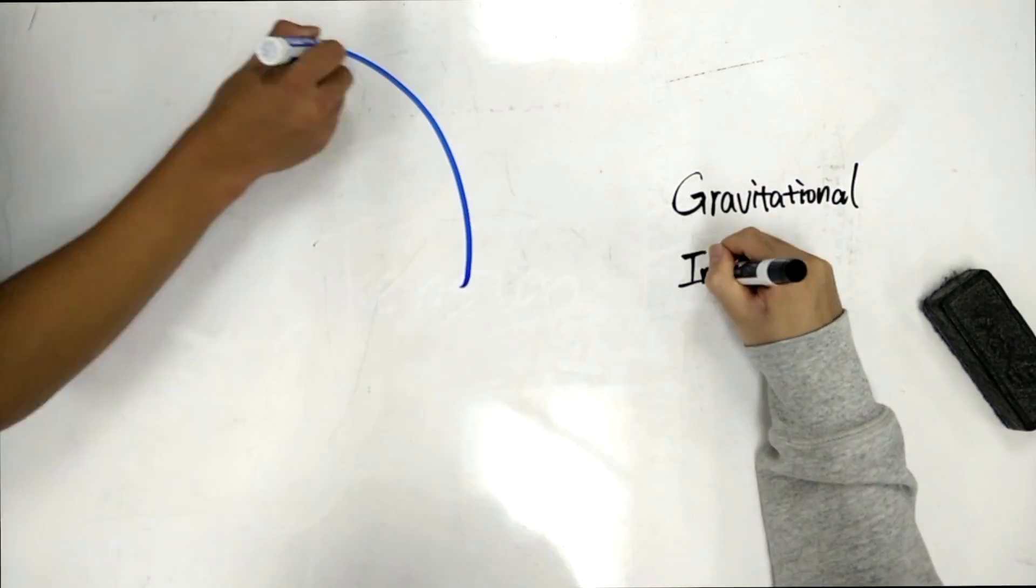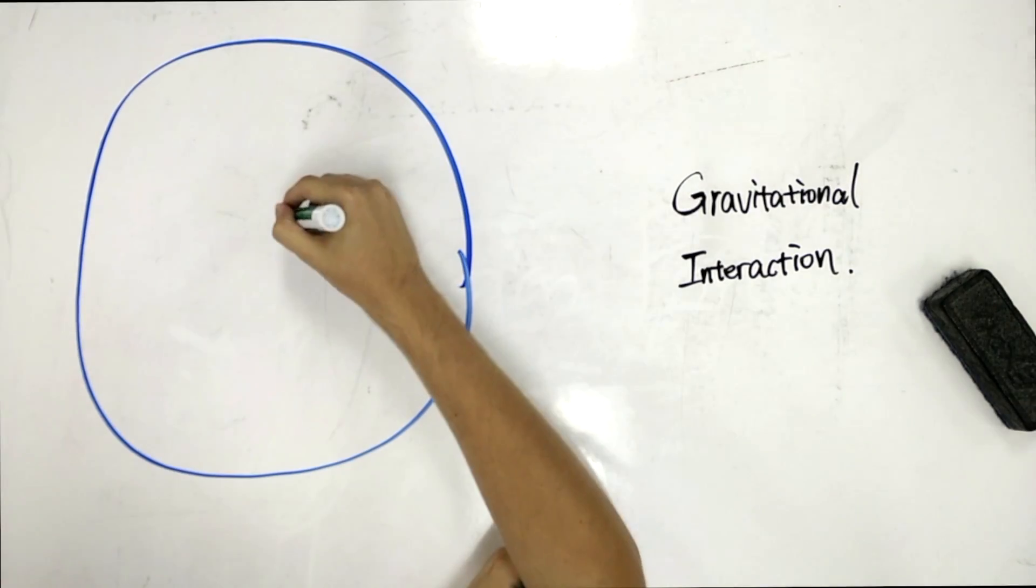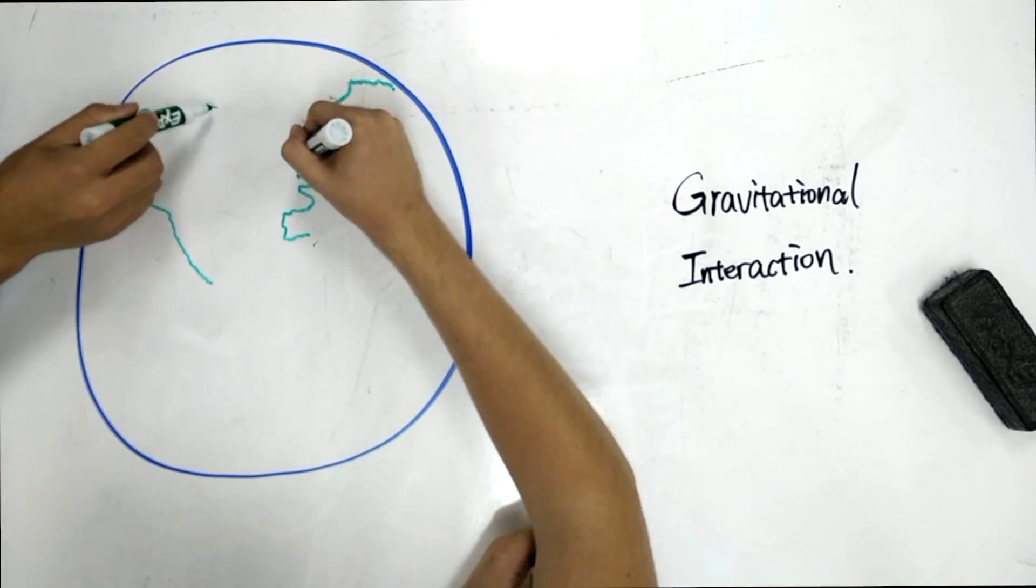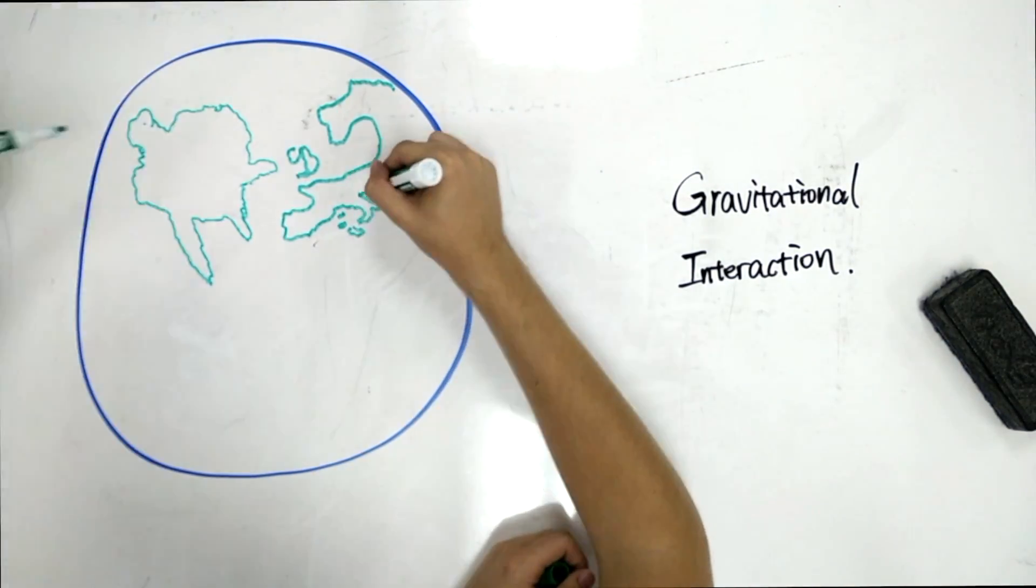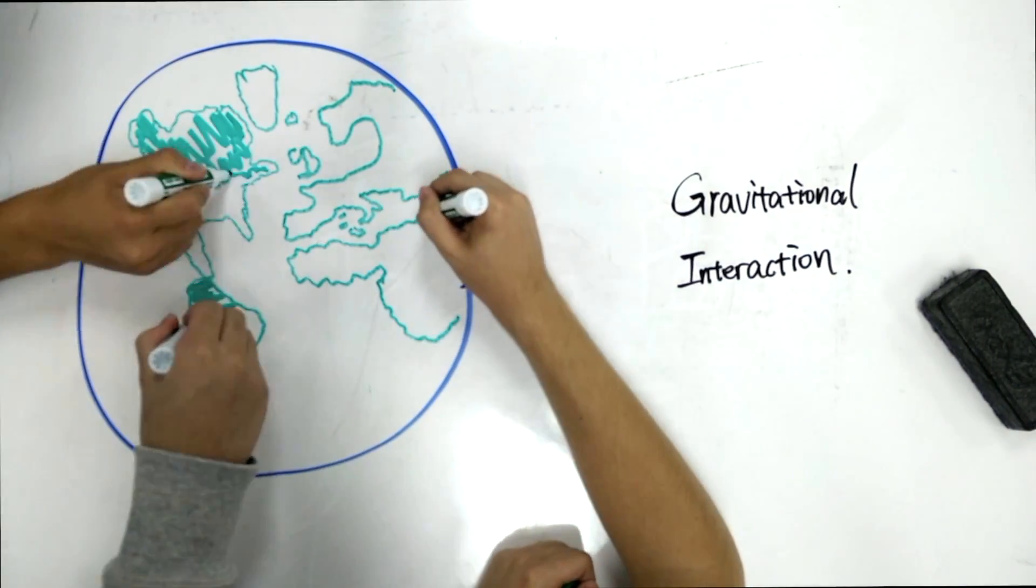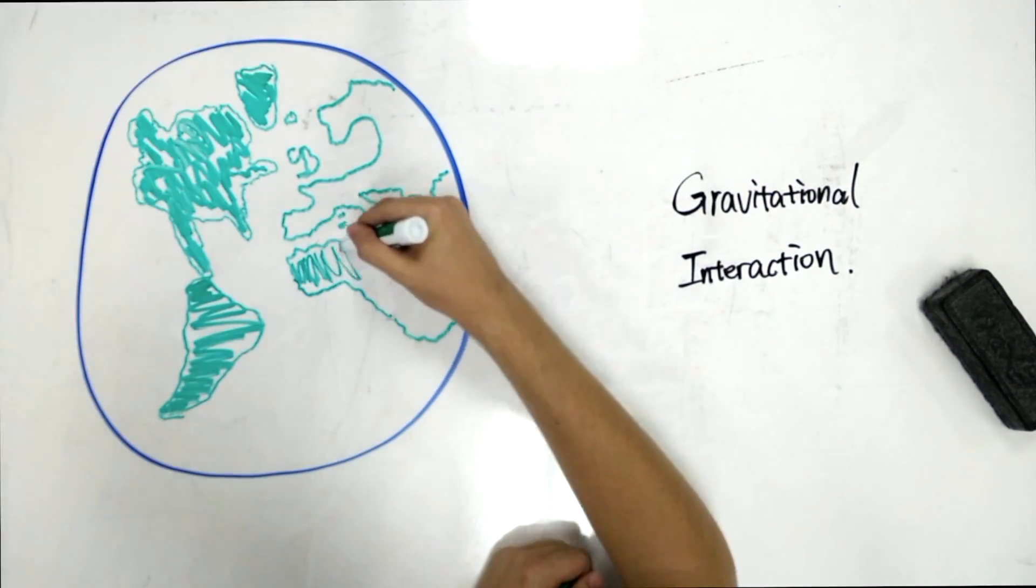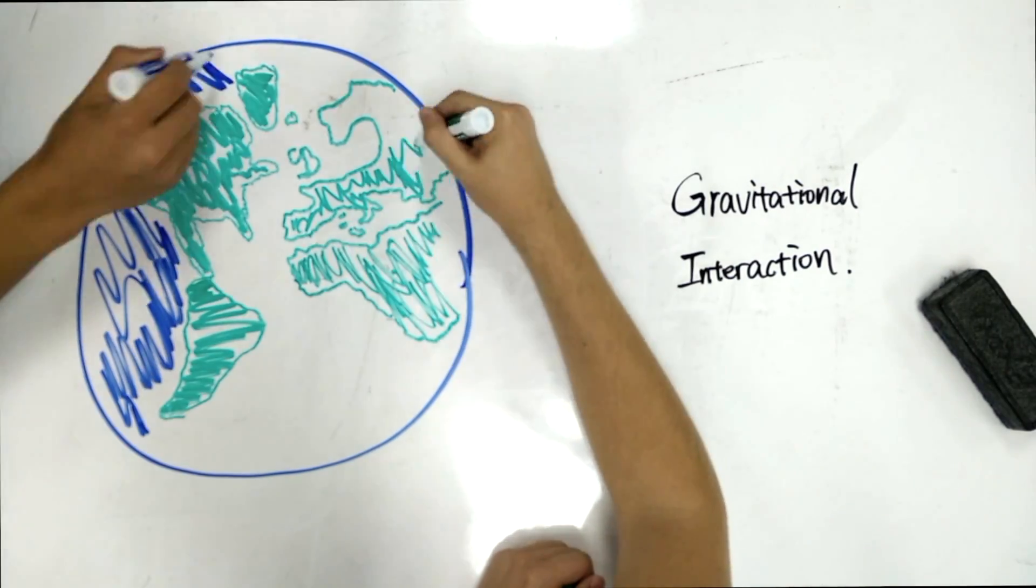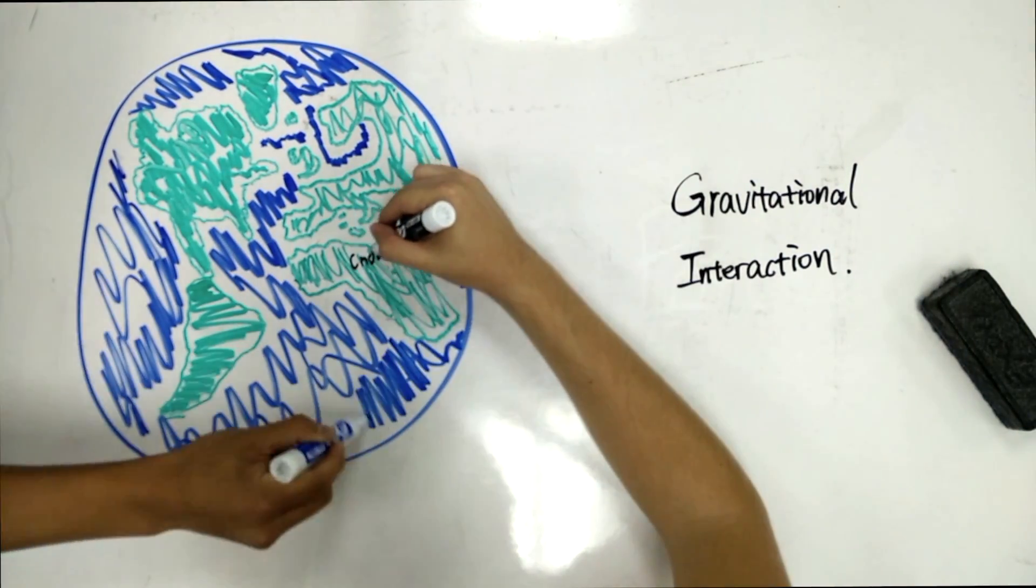Our final interaction is the gravitational interaction, and this causes gravity. Gravity is the attraction between any two objects that have mass. They're both attracted towards each other, however, the less-massive object is attracted more towards the more-massive object. That's how we are attracted to the Earth, and the Earth is really not moving towards us.